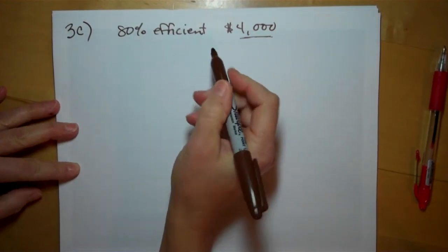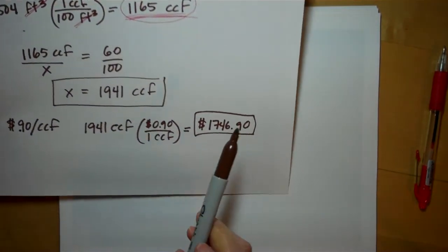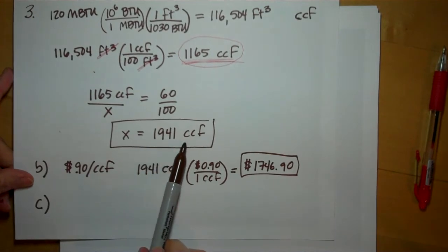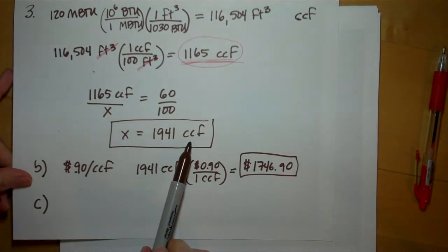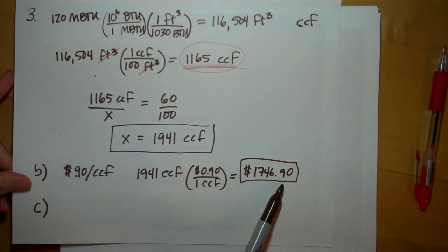If we go back to the original problem, the original problem showed that we needed 1,941 ccf to supply the heat because the furnace was only 60% efficient. That's how much it was costing us.